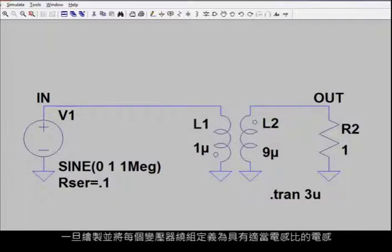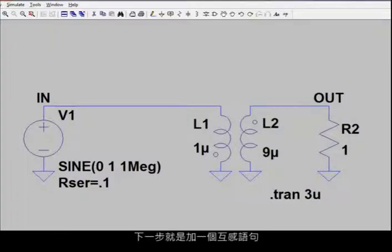Once you have drawn and defined each transformer winding as an inductor with the appropriate inductance ratio, the next step is to include a mutual inductance statement. Mutual inductance is designated in SPICE by beginning the first word of a new line with the letter K.